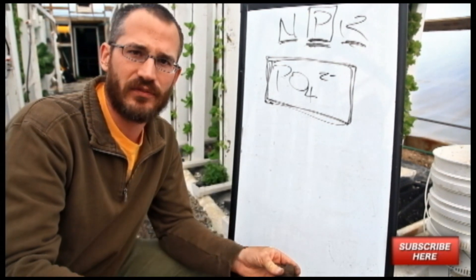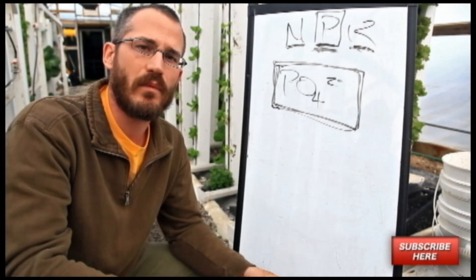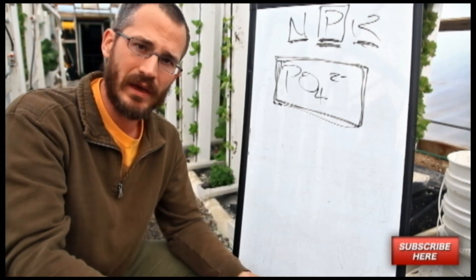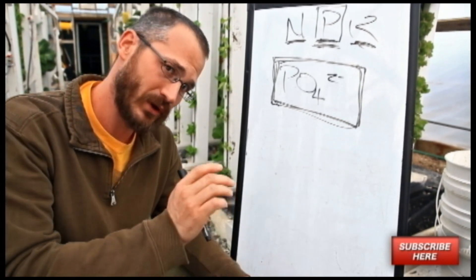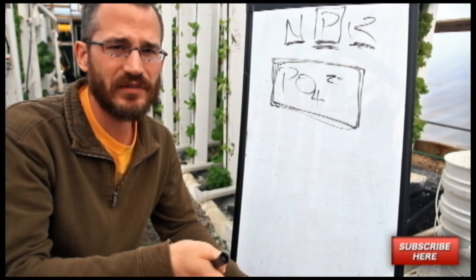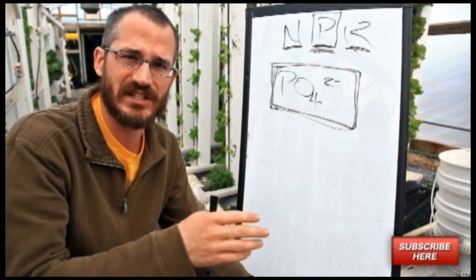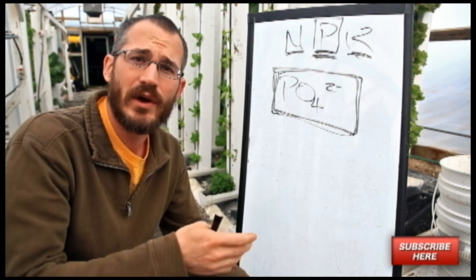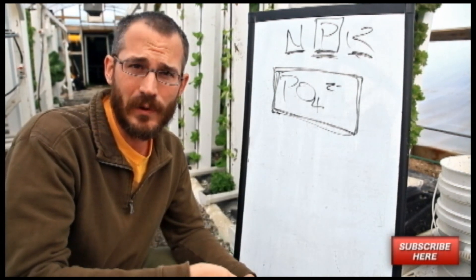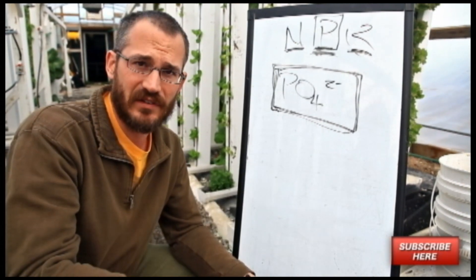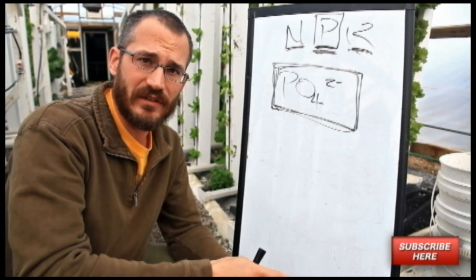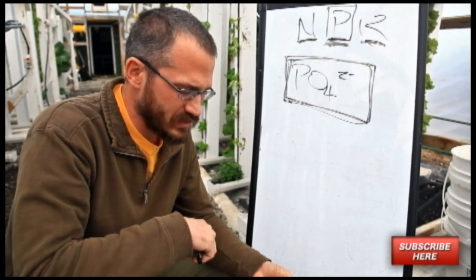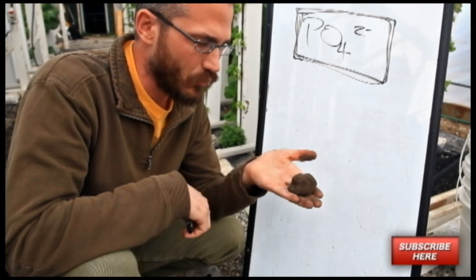So what I recommend for folks that want to grow tomatoes, cucumbers, some of these fruiting crops, is that you actually have two different systems. You have one system where you're willing to supplement some phosphate and perhaps some more potassium, and you have another system where you're growing your greens and herbs. And my reason for that is that adding potassium and adding phosphate can actually stimulate reproductive growth, which is something we don't want to do in our vegetative system.